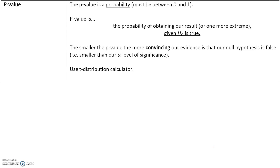The p-value is the probability of obtaining our observed result given that H-naught is true. The smaller the p-value, the more convincing our evidence is that the null hypothesis is false. So if the p-value is smaller than alpha, or the level of significance, we will reject the null hypothesis. If it's greater than alpha, we will fail to reject the null hypothesis.